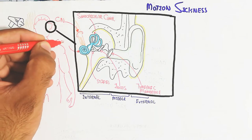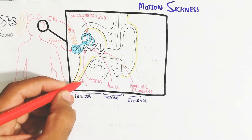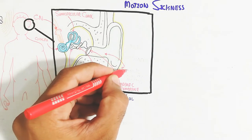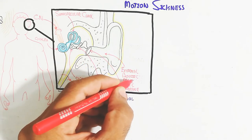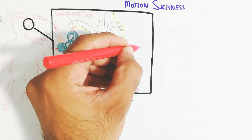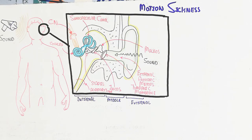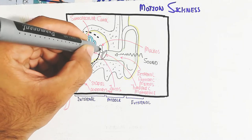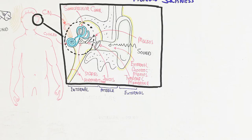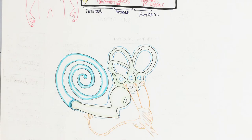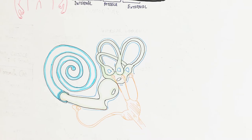The cochlea transmits the signal through the cochlear nerve. The semicircular canal is used for balance. The auditory tube is used for pressure detection, and the external acoustic meatus is for sound detection. Sound vibrates the tympanic membrane, travels to the cochlea, and inside the cochlea cilia are present. The endolymph fluid moves and vibrates the cilia, which transmit the signal to the cochlear nerve for audition — for listening.